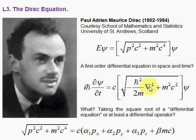This is something with the Laplacian inside. How do you take the square root of the Laplacian plus something? How do you take the square root of a differential operator? This doesn't make any sense. But Dirac proceeds to do just that.